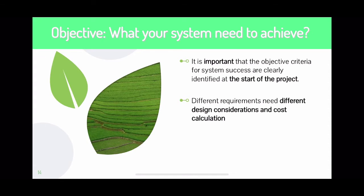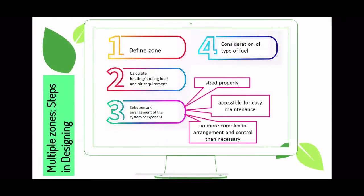It is very important that you know the objective criteria for a system to be successfully used, and you must have a clear identification at the start of the project during the drafting stage. You cannot build air conditioning systems throughout a building after it is completely done — that is very impractical. Some requirements and systems have different design considerations, cost calculations, and types of components. Sometimes you can use solar power, sometimes high efficiency motors, and so on.